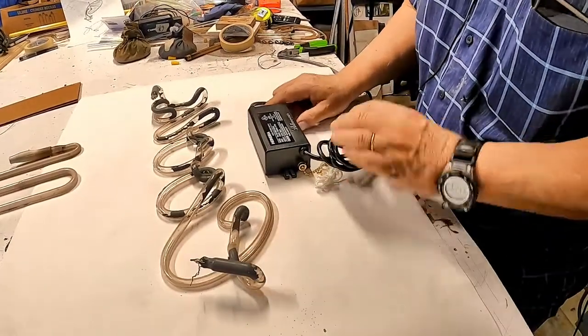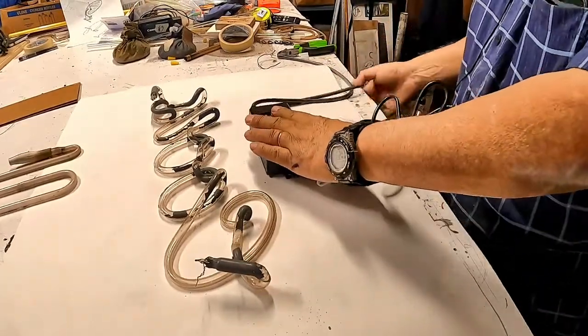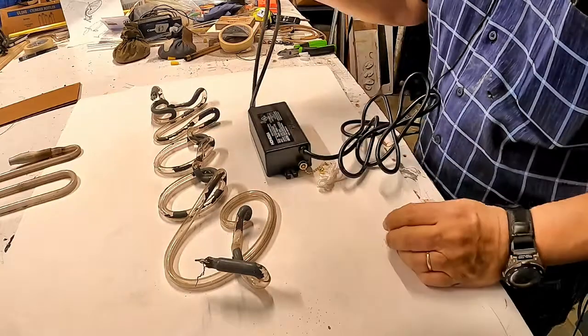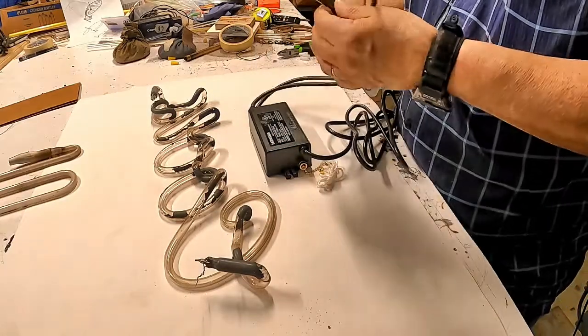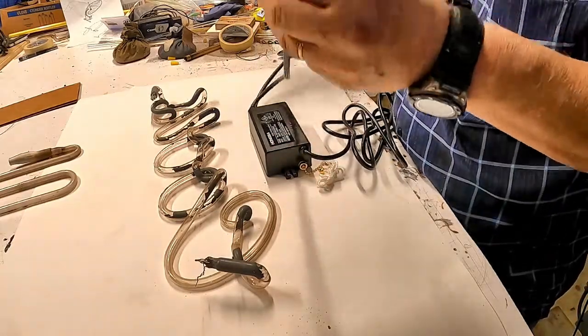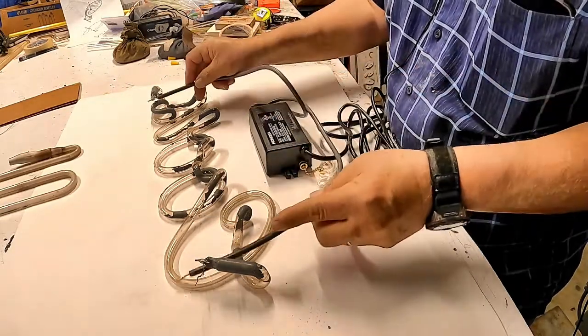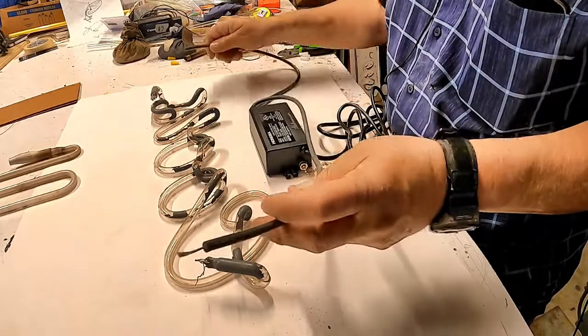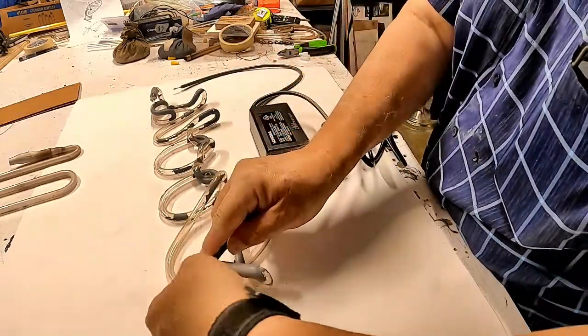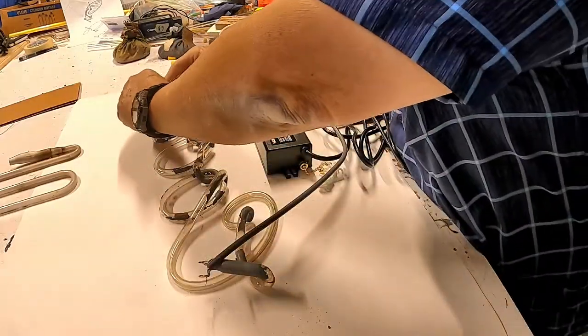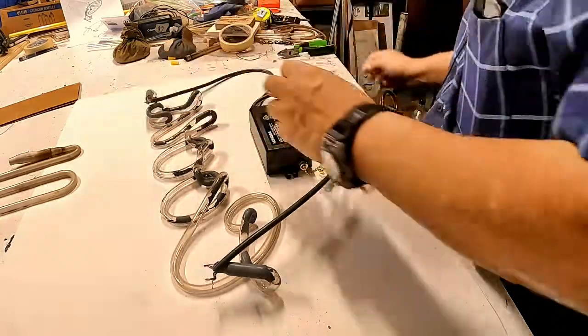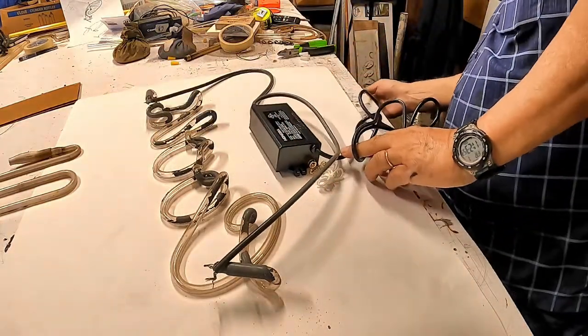So we've got here a transformer and here are the two wires that go to the end. Doesn't matter which one goes where. It could be like this or it could be like this. They're not polarized. So let's connect this one here and this one here and put the power.